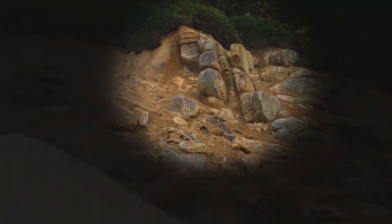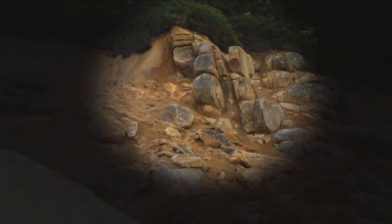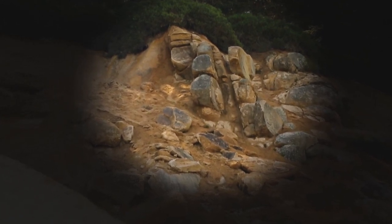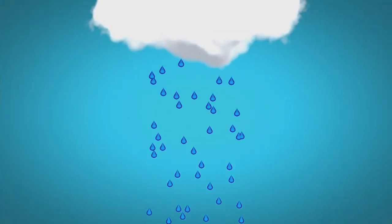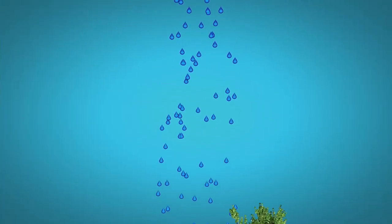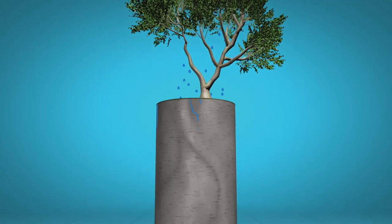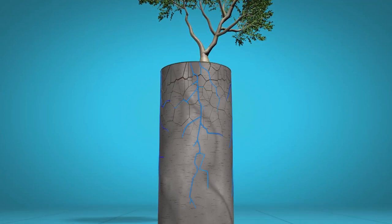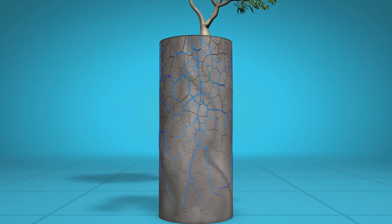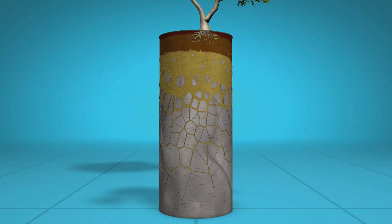Hier sehen wir, wie sich Gestein entlang der Brüche in Boden umgewandelt hat. Der Prozess der Verwitterung läuft hier derzeit ab, aber sehr langsam. Boden, die Haut der Erde, entsteht überall dort, wo Wasser auf Gestein trifft. Hier sickert Regenwasser durch Brüche und Risse in das Gestein hinein. An den Brüchen löst sich das Gestein durch chemische Reaktion auf, es bilden sich Tonminerale und oben wird Bodenkohlenstoff aufgebaut.